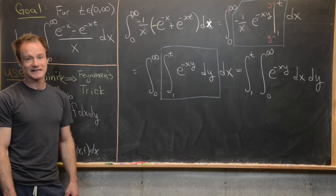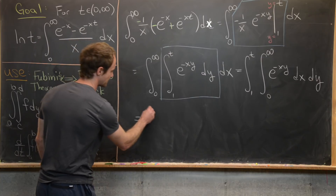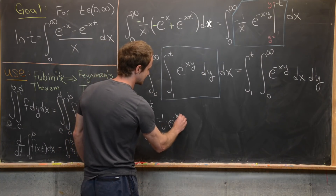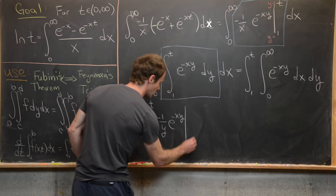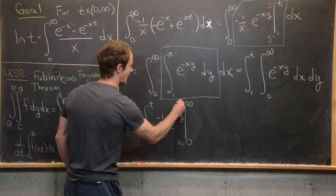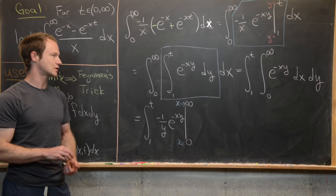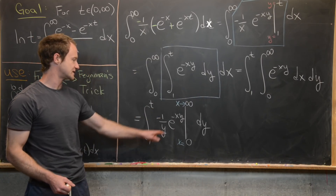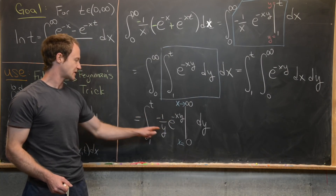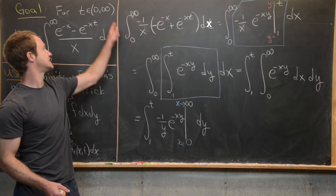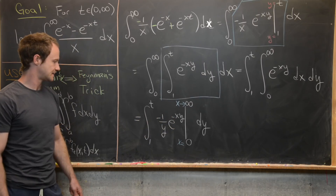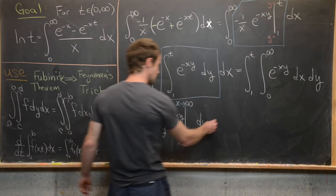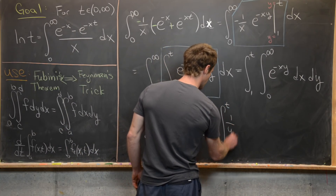Now I want to take the antiderivative of the innermost integral. We have the integral from one to t of minus one over y times e^(-xy) evaluated from x equals zero to x approaching infinity, dy. As x approaches infinity, e^(-xy) goes to zero — noting that all values of y are between one and t where t is positive. Plugging in x equals zero gives e^0 equals one, but since that's the lower bound it changes the sign. So we get the integral from one to t of one over y dy.